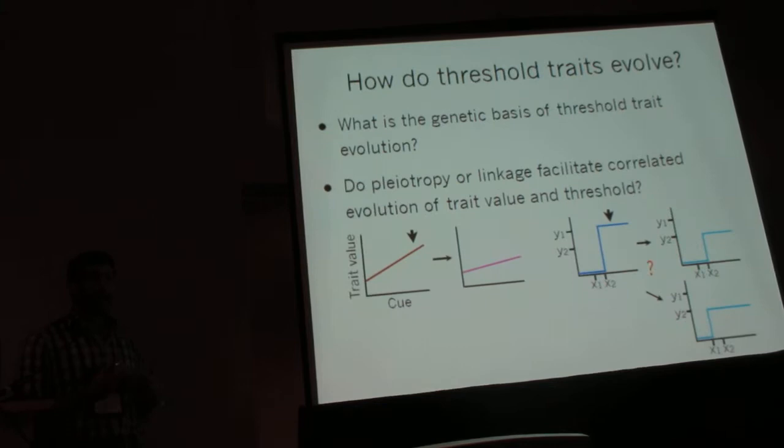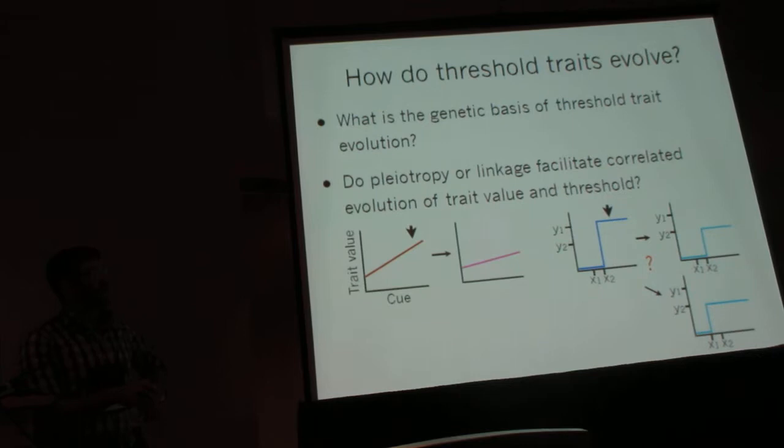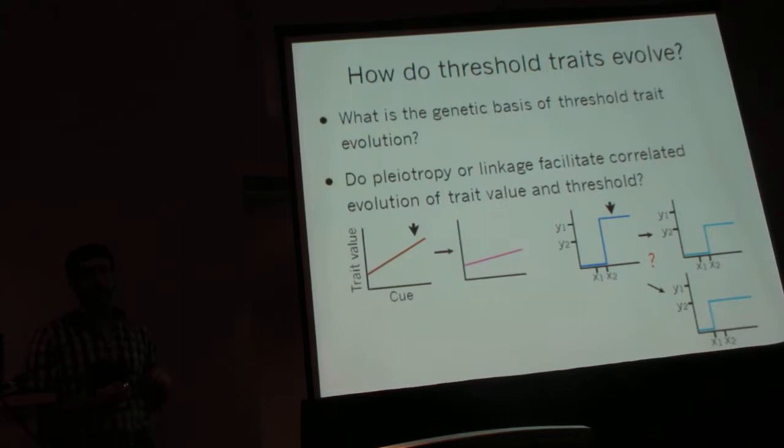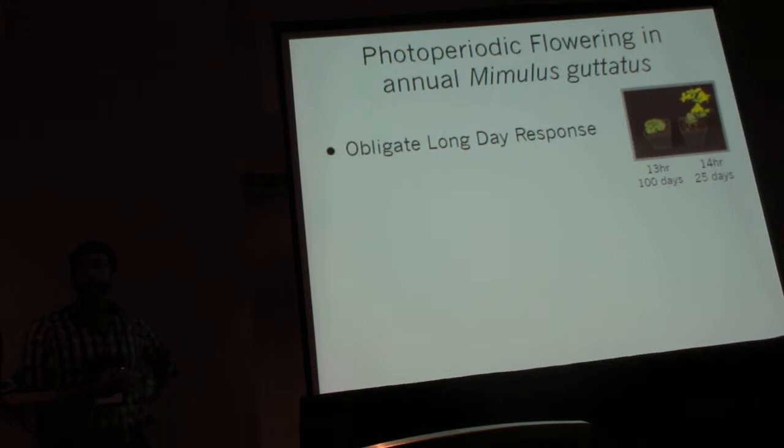In contrast, if these parameters are correlated, that may provide some constraint, but it also means that if selection is maintaining variation in the trait value within an environment, it's also maintaining variation in the threshold. This leads to standing variation that could adapt future generations to new environments or environmental challenges.